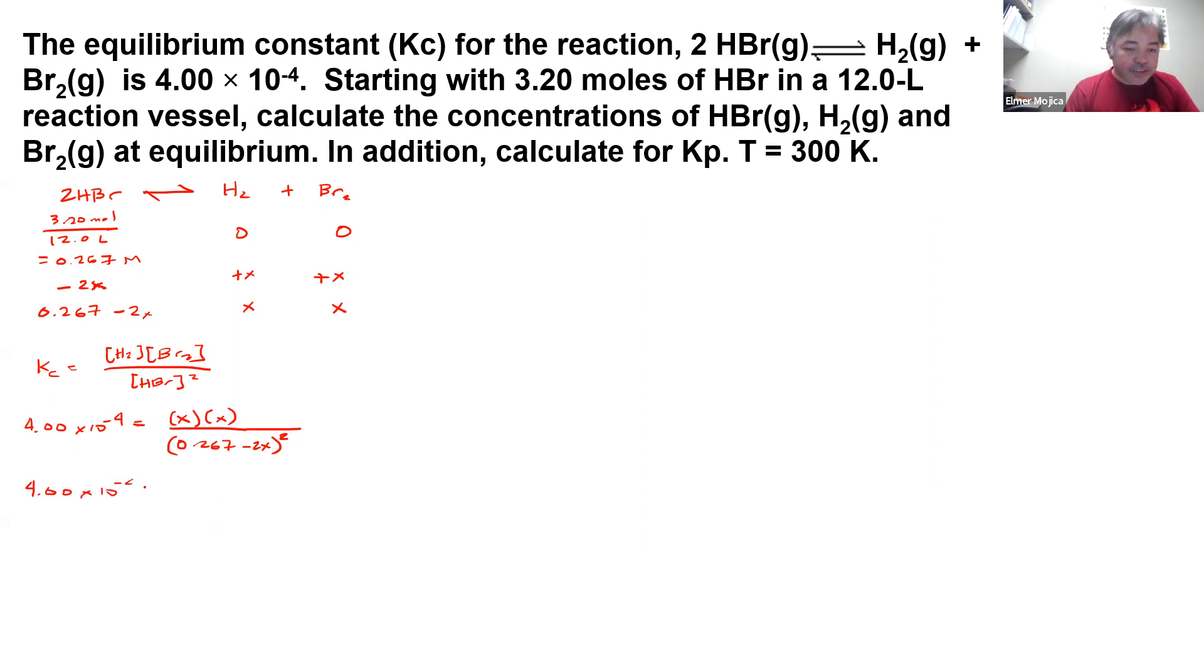4.00 times 10^-4, and then you have x squared over (0.267 minus 2x) squared. So we get the square root here. If we continue here, 0.020 equals x over (0.267 minus 2x).